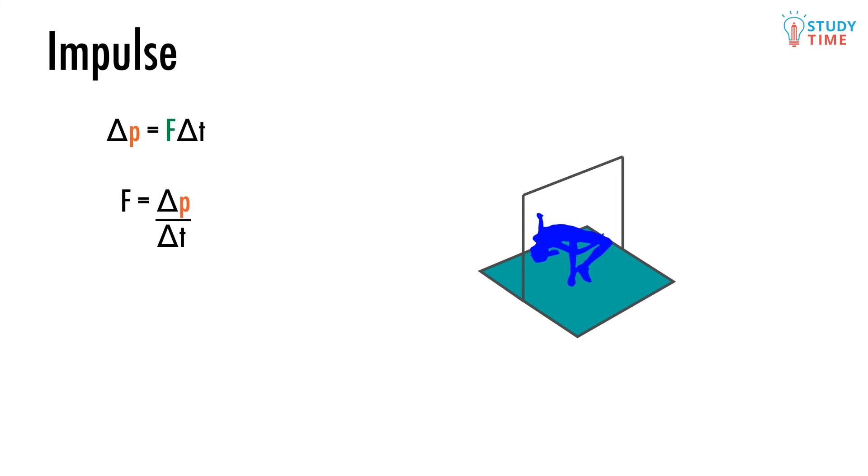Let's say you clear the bar and you're falling at 4 meters per second, and that you have a mass of 60 kilos. Therefore your momentum will be 240 kilogram meters per second. Now say that we know the collision with the mat takes 3 seconds to finish.